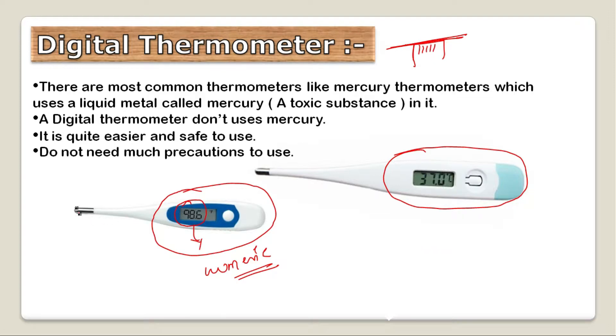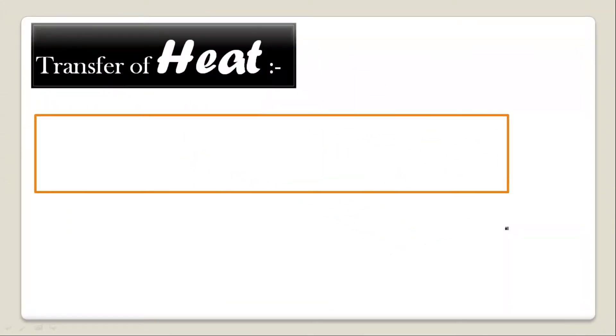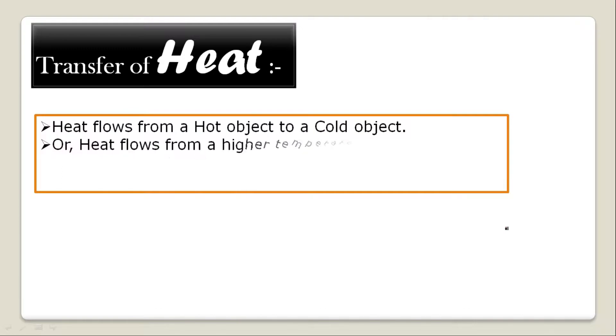This is why digital thermometers are preferred over mercury thermometers. Moving forward, the next topic is transfer of heat: heat flows from a hot object to a cold object.